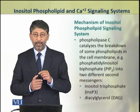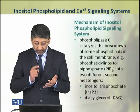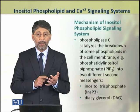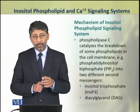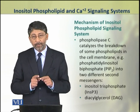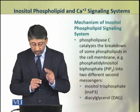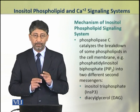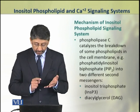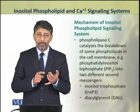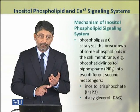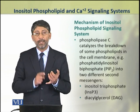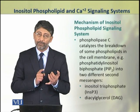The Phospholipase-C enzyme catalyzes the breakdown of phospholipids in the plasma membrane, for example Phosphatidyl inositol bisphosphate or PIP2. As a result, two different second messengers are formed: first is inositol trisphosphate and second is diacylglycerol.